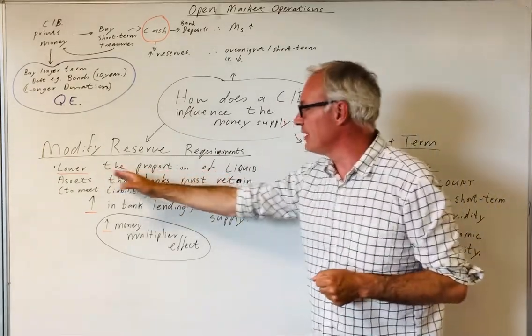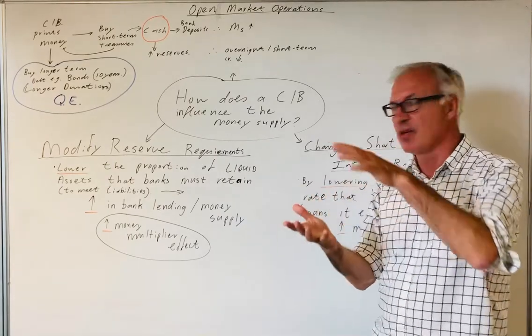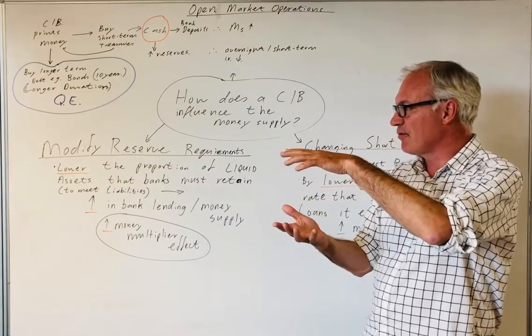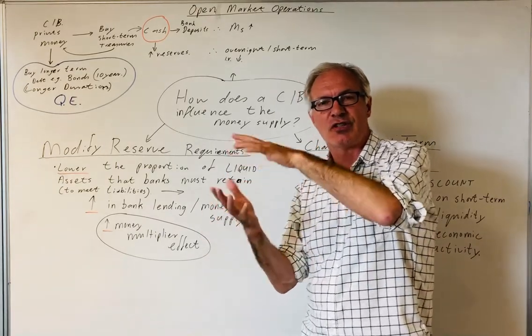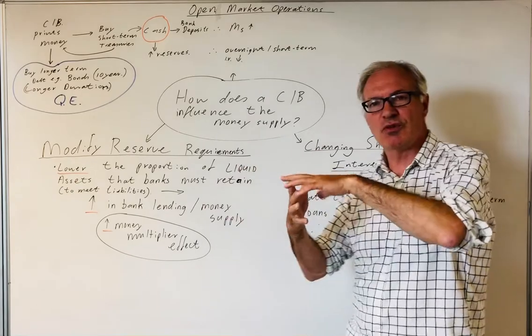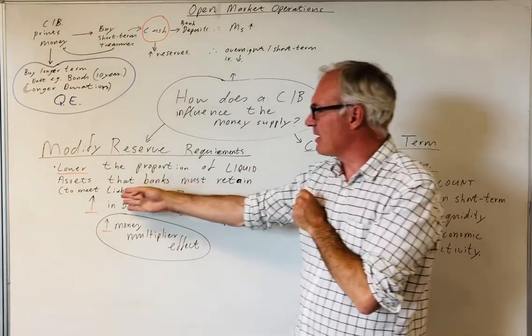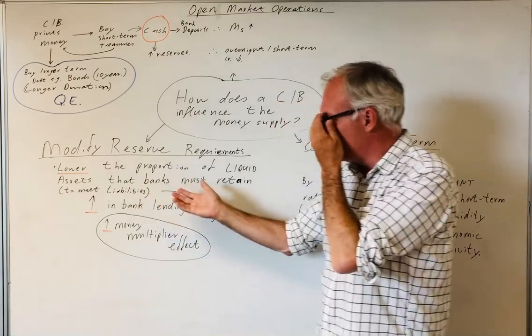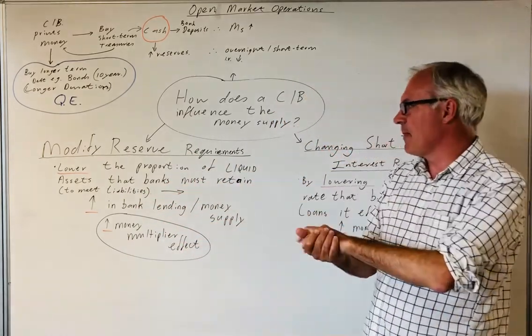For instance, by lowering the proportion of liquid assets that a bank must retain. Remember that banks retain liquid assets such as cash, loans, and coins in case people want to withdraw their cash from the bank, so the bank is able to meet its liabilities.